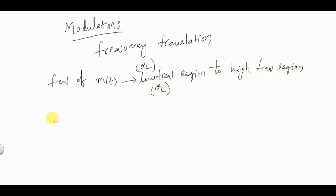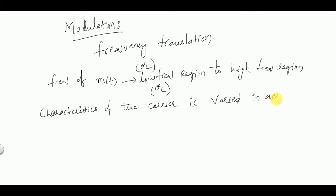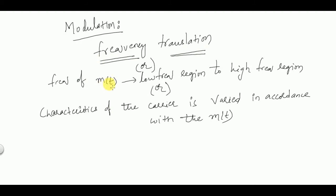Modulation is also defined as the process in which the characteristics of the carrier is varied in accordance with the message signal. So these are the two definitions of modulation: frequency translation — shifting from a low frequency region to a high frequency region — and varying the carrier characteristics in accordance with the message signal.